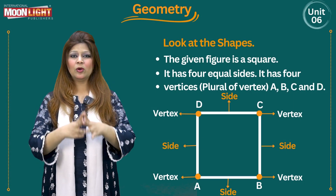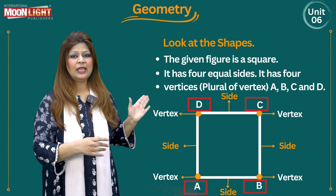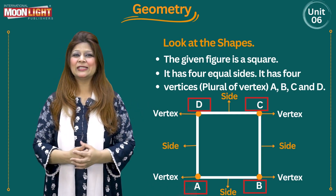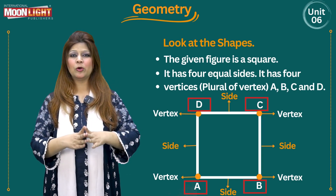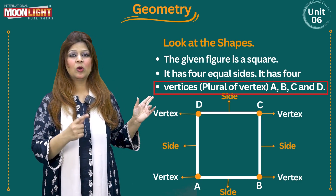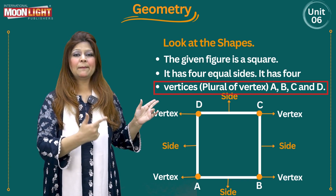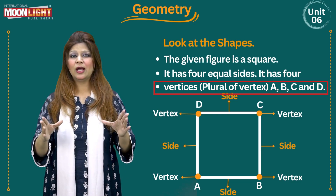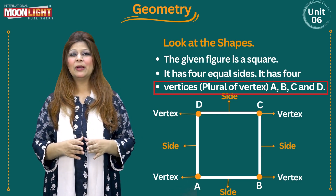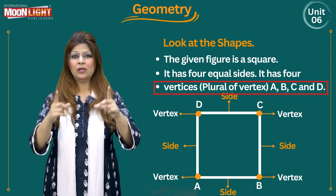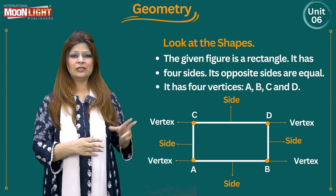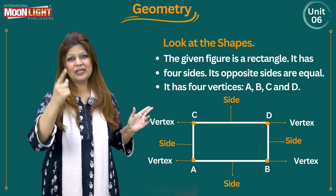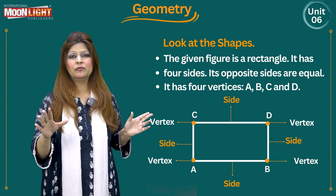So right now you need to concentrate on the figure. A, B, C, D — this is a square. These four points, capital A, capital B, capital C and D — these all four are vertices, because the comma means we are talking about them separately. Vertex is the corner, so keep this in mind so there is no confusion.